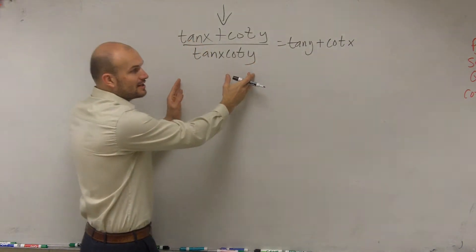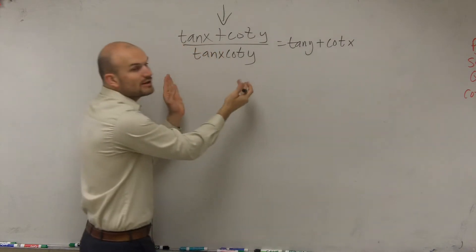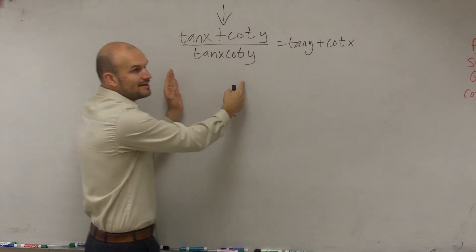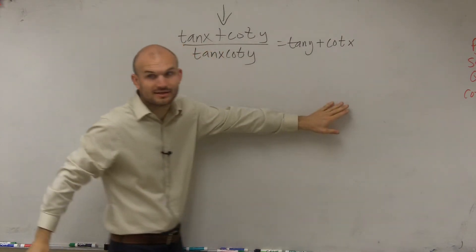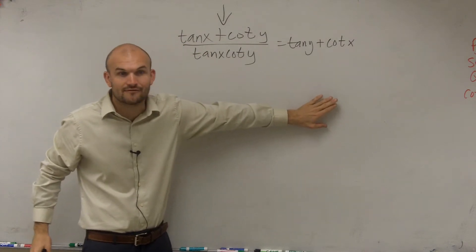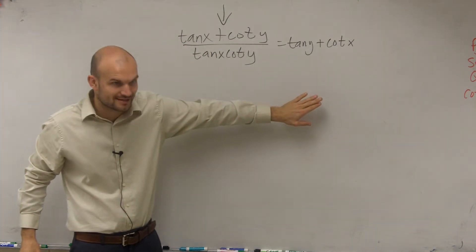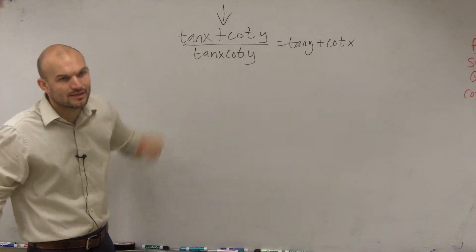We want to make this side look like that side. Right now this is a fraction. That is not a fraction. So would it make sense to take the fraction and get rid of the fraction so it then will hopefully look like one that's not a fraction? You guys kind of see my thinking.